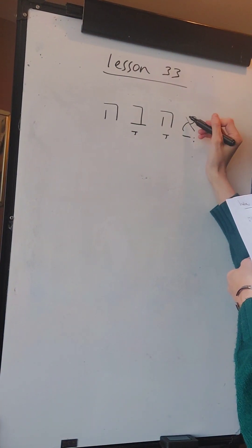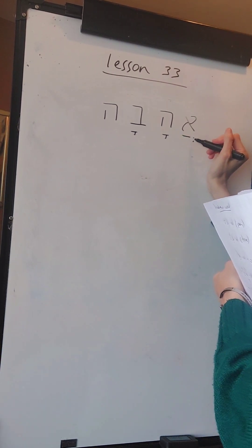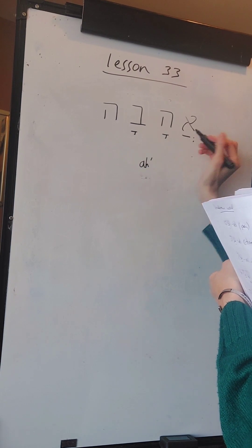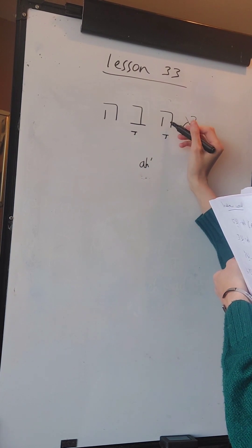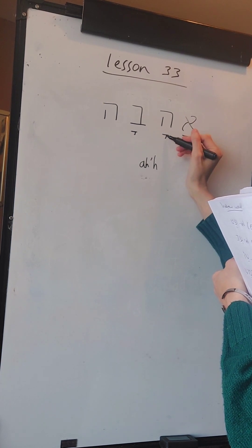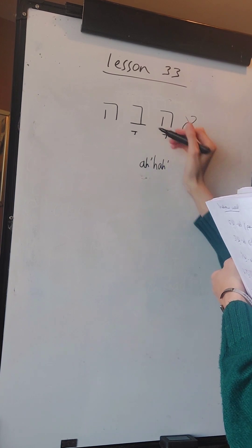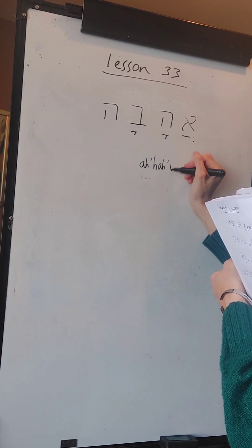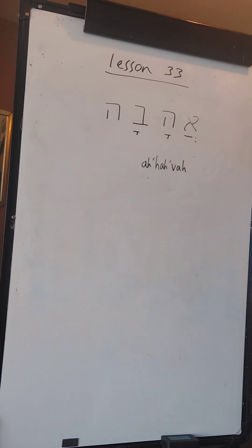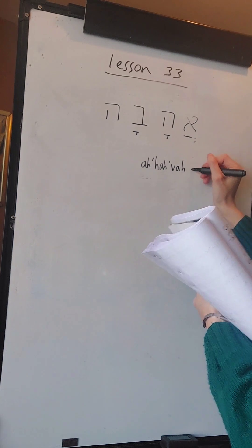The Alef is silent, so it takes on just the sound of the vowel, which is the A vowel - sounds as A. Go to the next Hebrew letter, this is the He - add the sound of the vowel which is A - HA. This is the Vet, sounds as V with the A vowel underneath. The He at the end is silent - AHAVA, which means love.